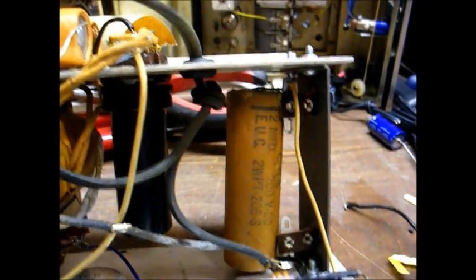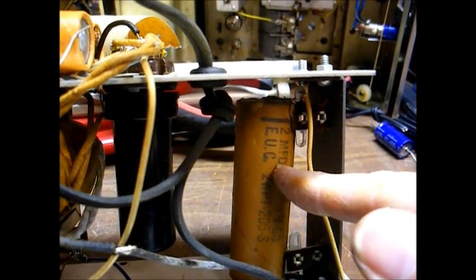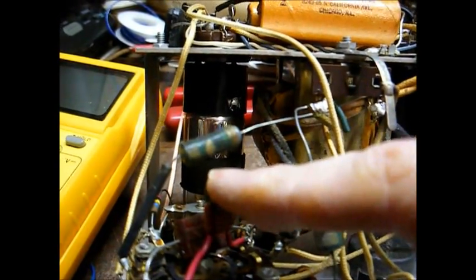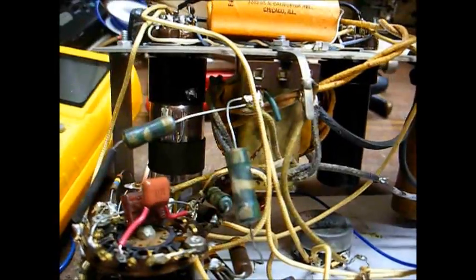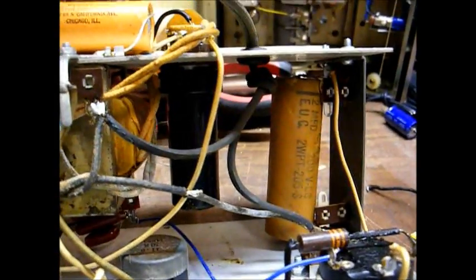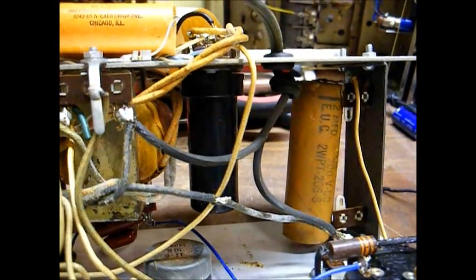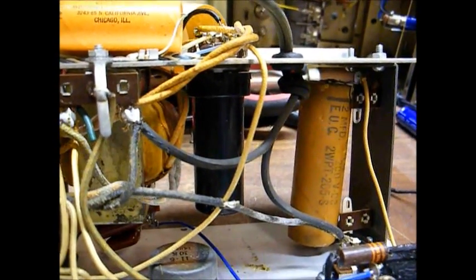The same goes for a few capacitors in here. This is a 2 microfarad capacitor, this is a 0.02 microfarad capacitor, and this is a 200 picofarad capacitor. All these are so-called precision capacitors that need to be very close tolerance in order for the unit to be accurate when measuring capacitance.